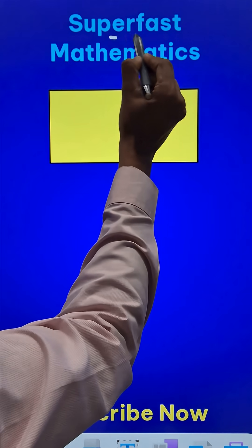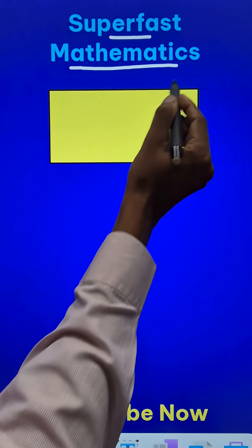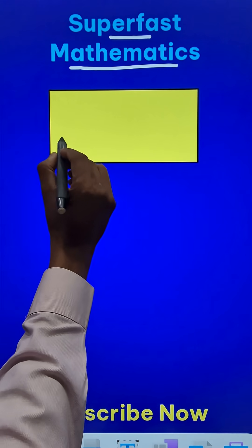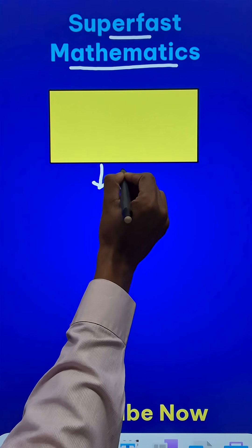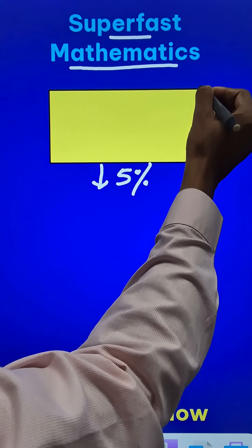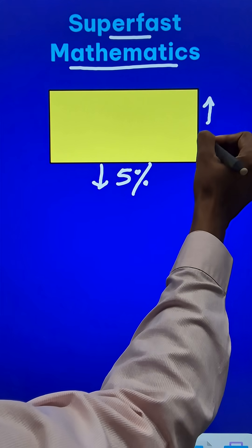Here is another superfast mathematics short trick. Suppose there is a rectangle whose length is being decreased by 5% and the width is being increased by 10%.